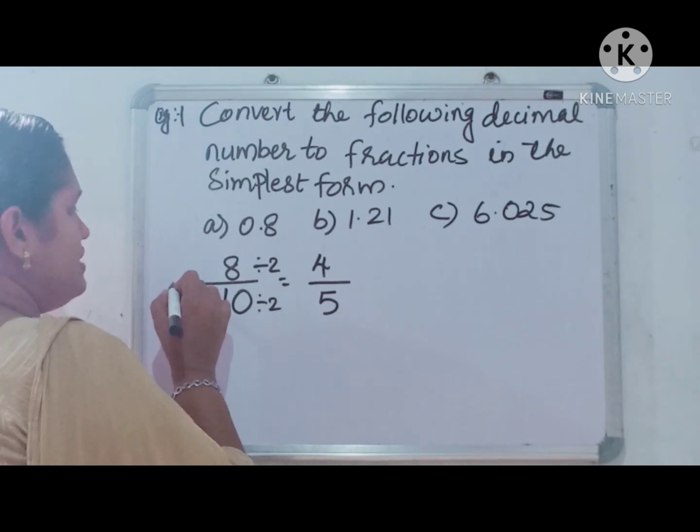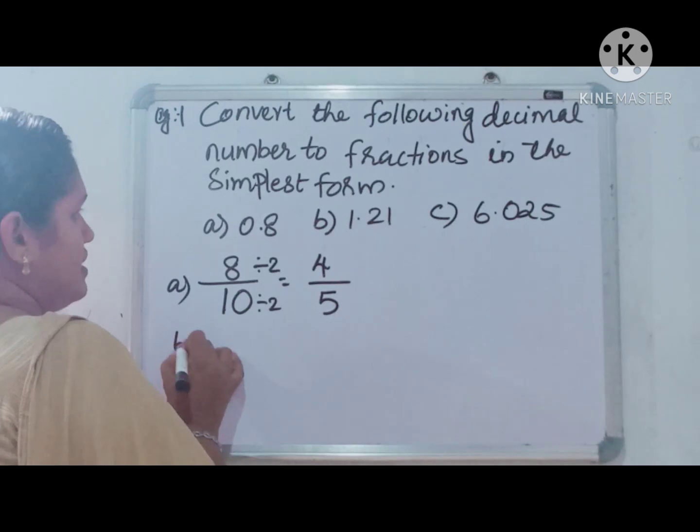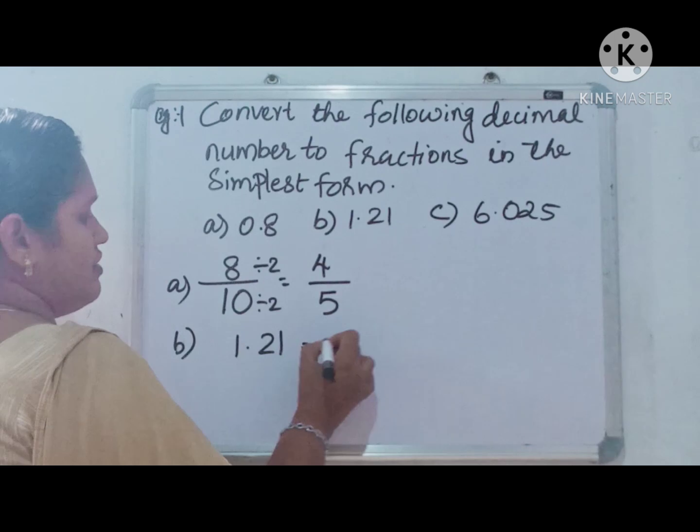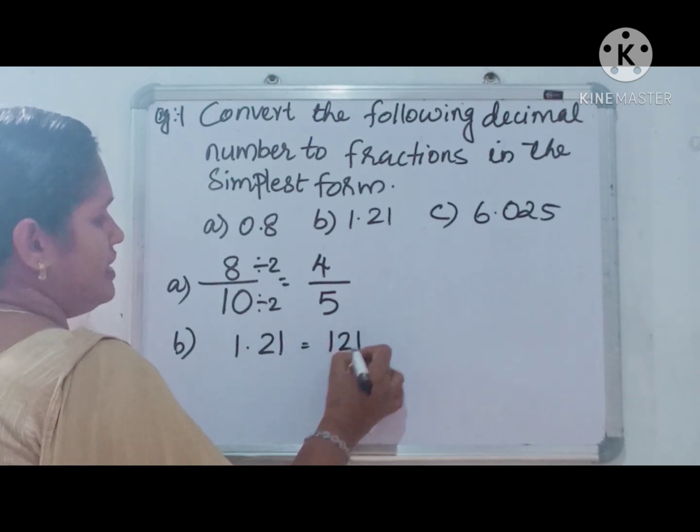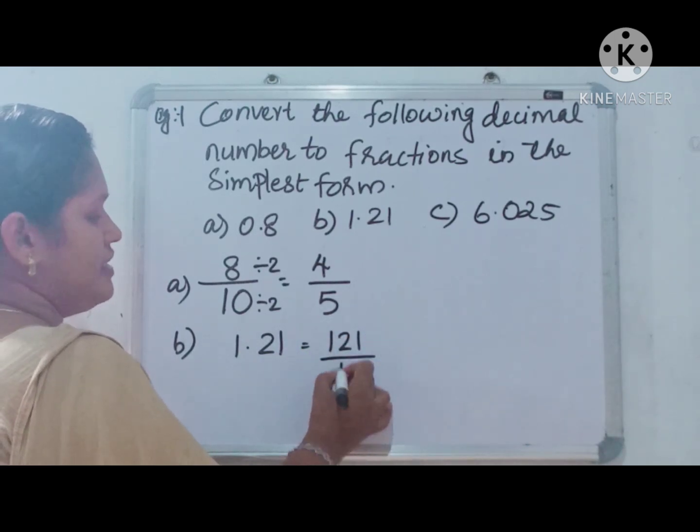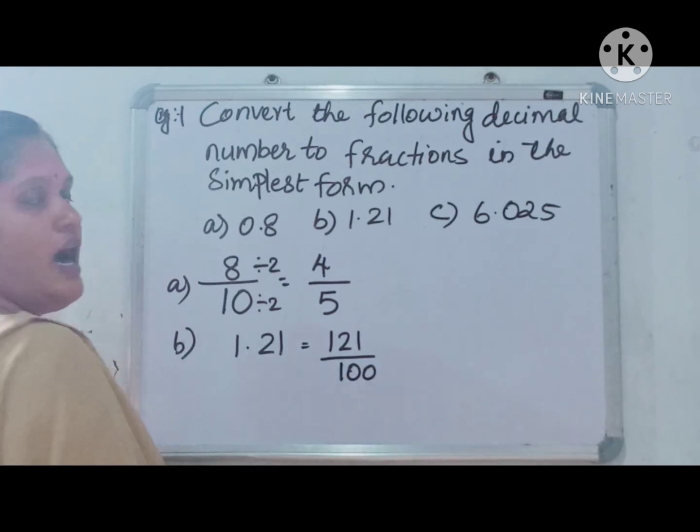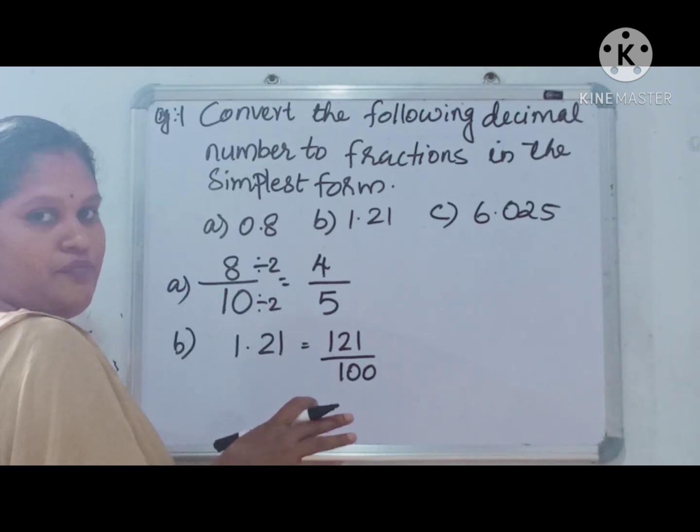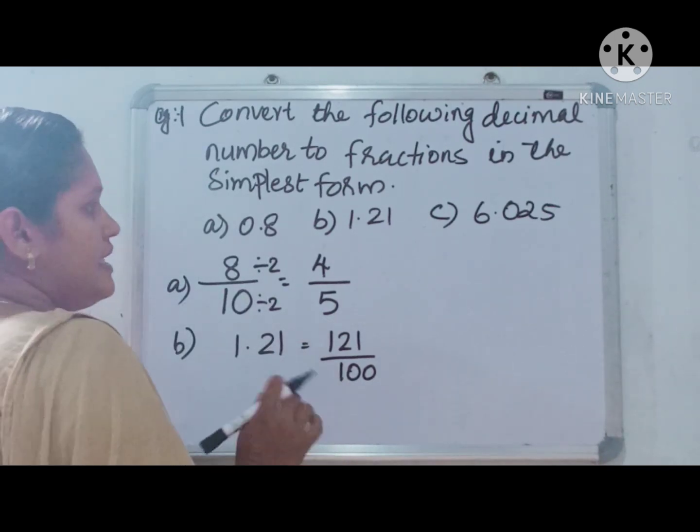Second, 1.21. 121 divided by 100. There is no common factor in 121 and 100, so this is the simplest form.